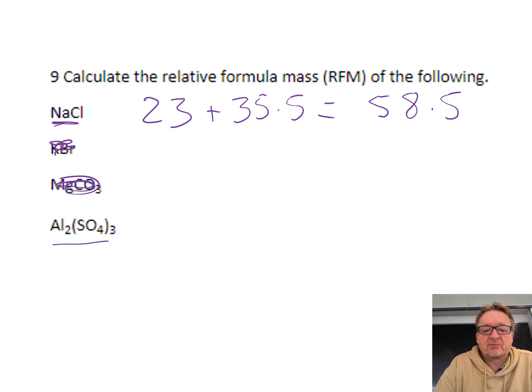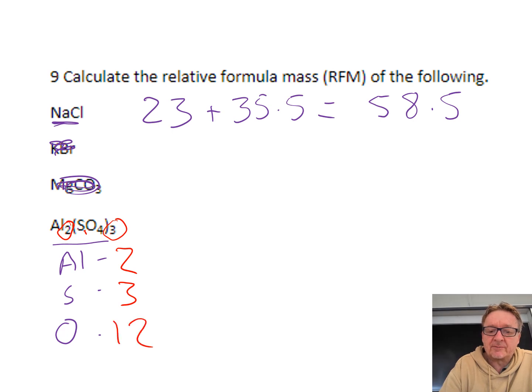The harder one is aluminium sulfate. I'm going to put aluminium, sulfur, and oxygen, then work out how many of each. That two says there's two aluminiums. The three on the outside means you multiply by everything in the bracket, so three sulfurs and 3 times 4 makes 12 oxygens.